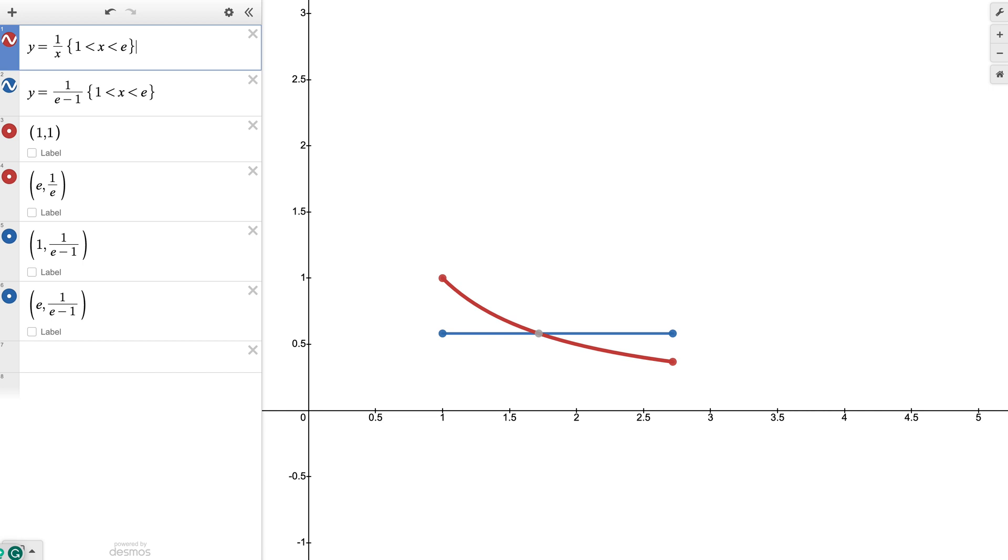And then I went and plotted y equals 1 over e minus 1. Note that's a constant function because 1 over e minus 1 is simply a value. So y equals a value is going to be a horizontal line which we see here. And then I just plotted some endpoints to make it a little more distinct.